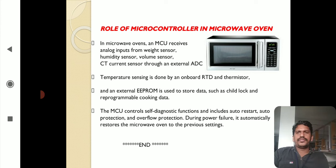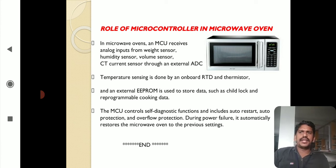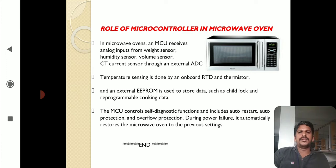The role of microcontroller in microwave oven: In a microwave oven, a microcontroller receives analog inputs from a weight sensor, humidity sensor, volume sensor, and CT current sensor through an external ADC — analog to digital converter. If we put a food item in the microwave oven, the sensors detect which type of food is placed and how much weight is involved, enabling the microcontroller to set the appropriate operating conditions.